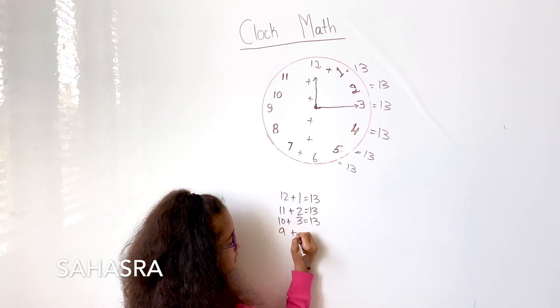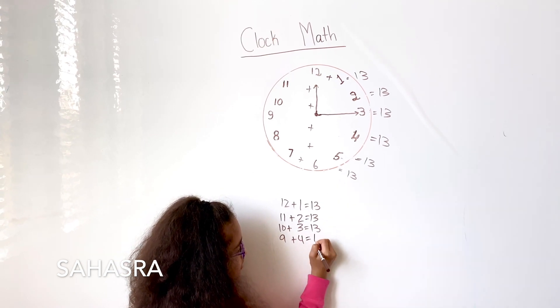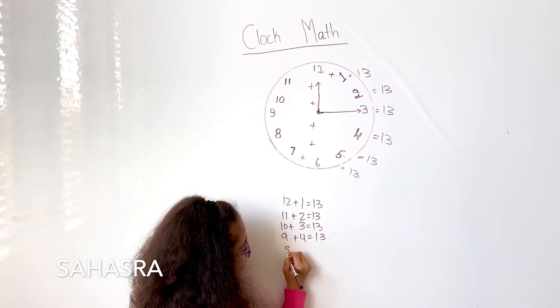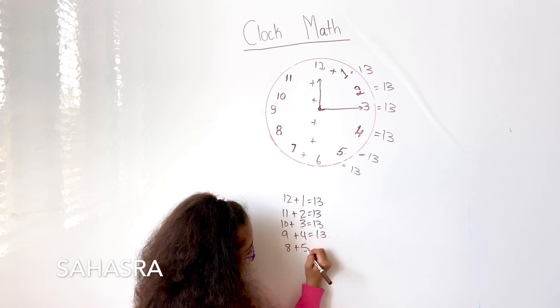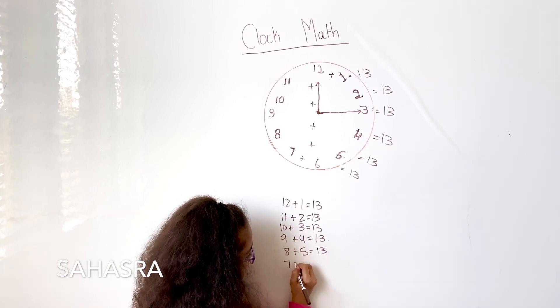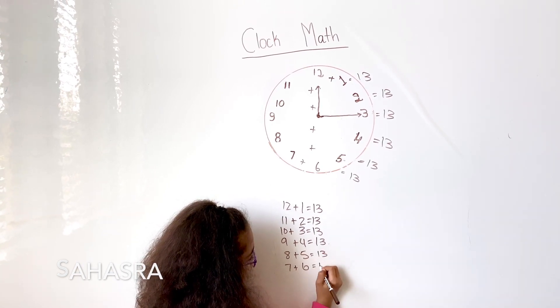9 plus 4 equals 13. 8 plus 5 equals 13. And 7 plus 6 equals 13.